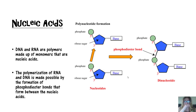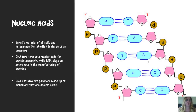DNA and RNA are polymers made up of monomers of nucleic acids. Combining the nucleic acids together and forming the phosphodiester bond is an anabolic reaction. DNA is the genetic material of the cells — it determines inherited features of the organism and is the master code for protein assembly. RNA plays the active role in manufacturing of the protein.